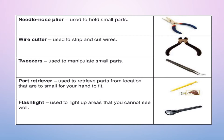The part retriever is used to retrieve parts from locations that are too small for your hand to fit. It is useful for retrieving screws and also helpful for retrieving jumped bits on the motherboard. They mainly come in sizes ranging from 4 to 9 inches. Lastly, the flashlight is used to light up areas that you cannot see well.